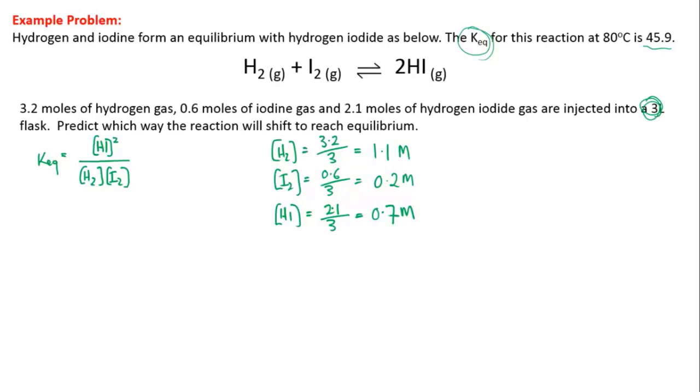To work out which way the reaction is going to shift, we have to evaluate Q so that we can compare it to Keq. So we evaluate Q by simply sticking these values into the equilibrium expression and seeing how it turns out.